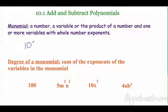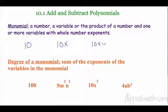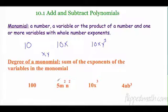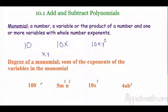A monomial could just be 10, it could be 10 times x, it could be 10 times x times y to the third, it could just be x by itself, or x times y. That's what a monomial is — each individual thing. We also call these terms. The degree of a monomial is the sum of the exponents of the variables in the monomial. So I'm looking for the sum of the exponents of the variables.